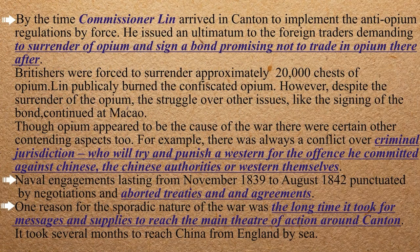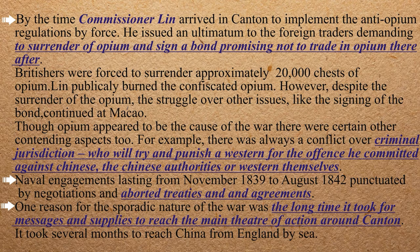Commissioner Lin was appointed to Canton, and the anti-opium regulations were strongly enforced. Foreign traders were told to surrender their opium and sign a bond that they would not trade in it anymore. The British traders refused to comply. They were forced to surrender the opium — approximately 20,000 chests — which was a very large quantity.